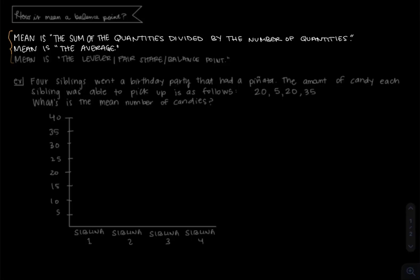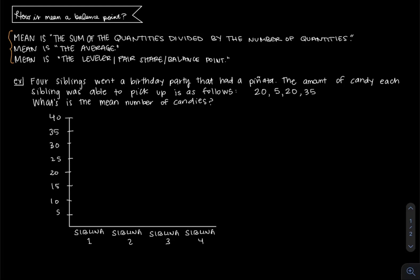As you see in the beginning of this video on the top, mean is defined as the sum of quantities divided by the number of quantities, mean is the average, and those two first definitions feel very typical of what we've learned what mean is.